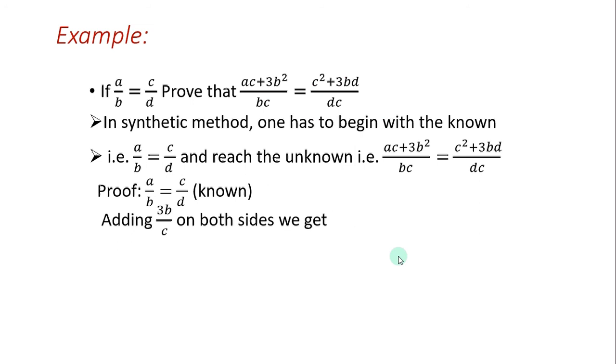Proof. Now, what to prove? a/b equals c/d, that is the known part. So here, by taking this, add 3b/c on both sides. What do we get? a/b + 3b/c equals c/d + 3b/c. So now we add 3b/c on both sides. Here, take LCM on both sides, bc, then we get ac+3b² / bc equals c²+3bd / dc.